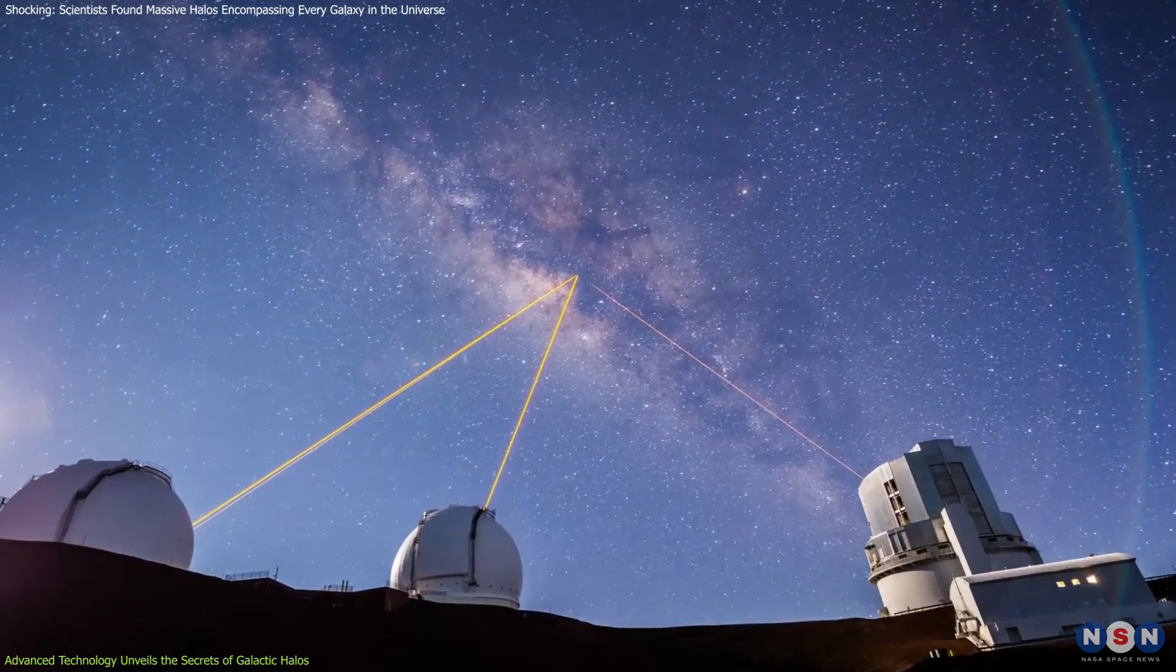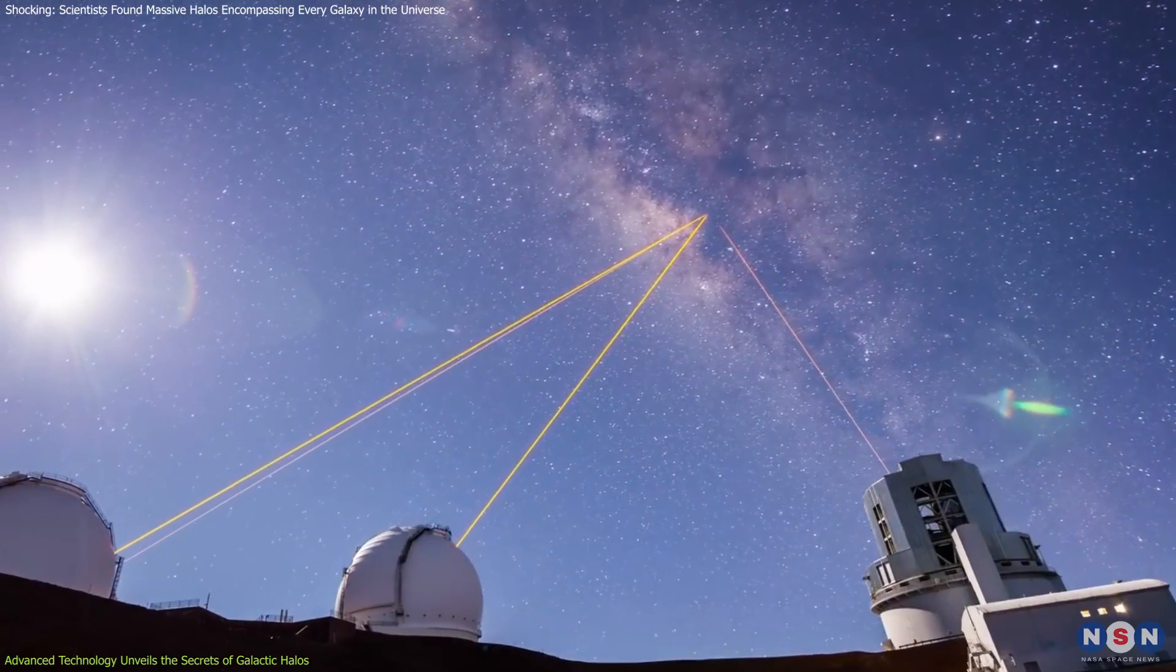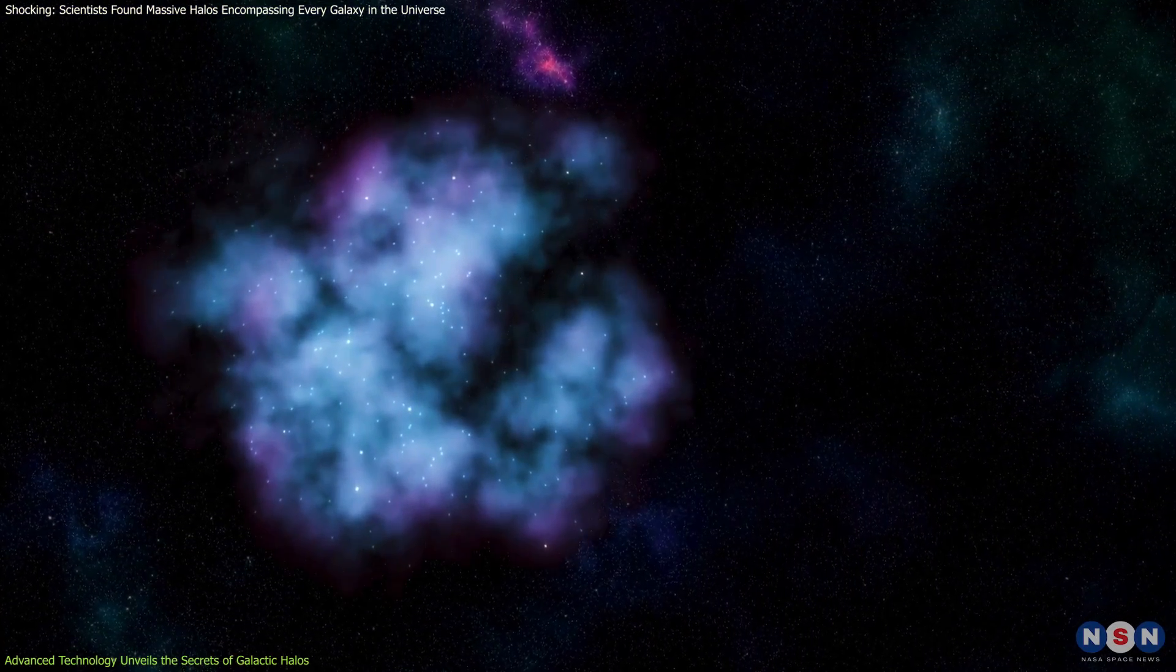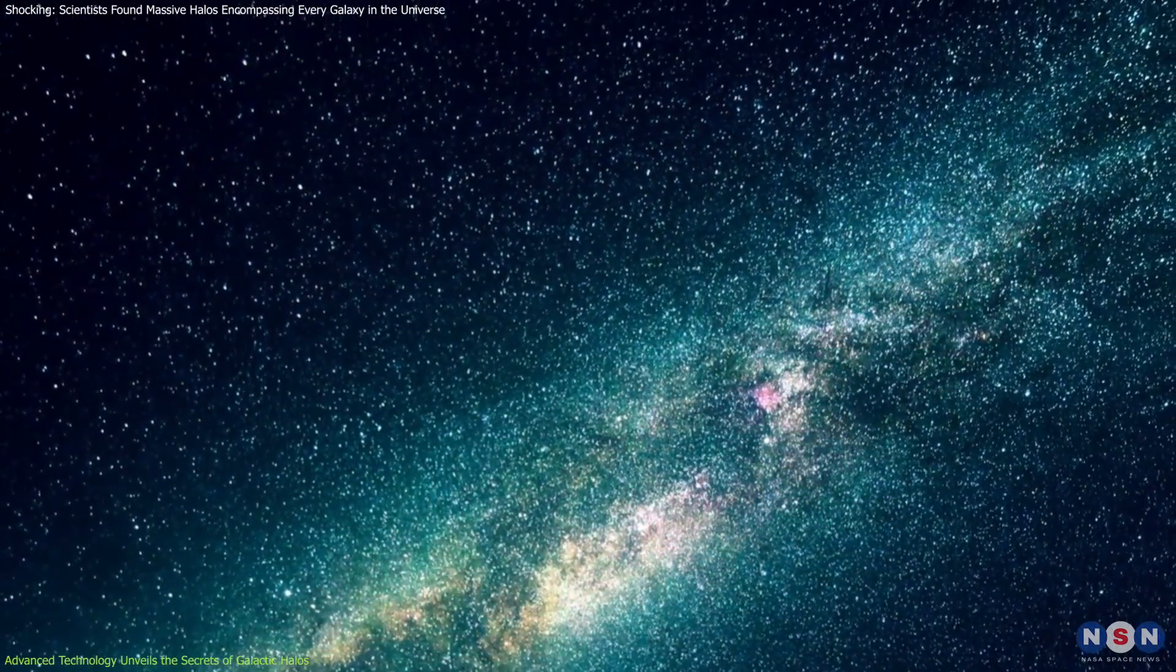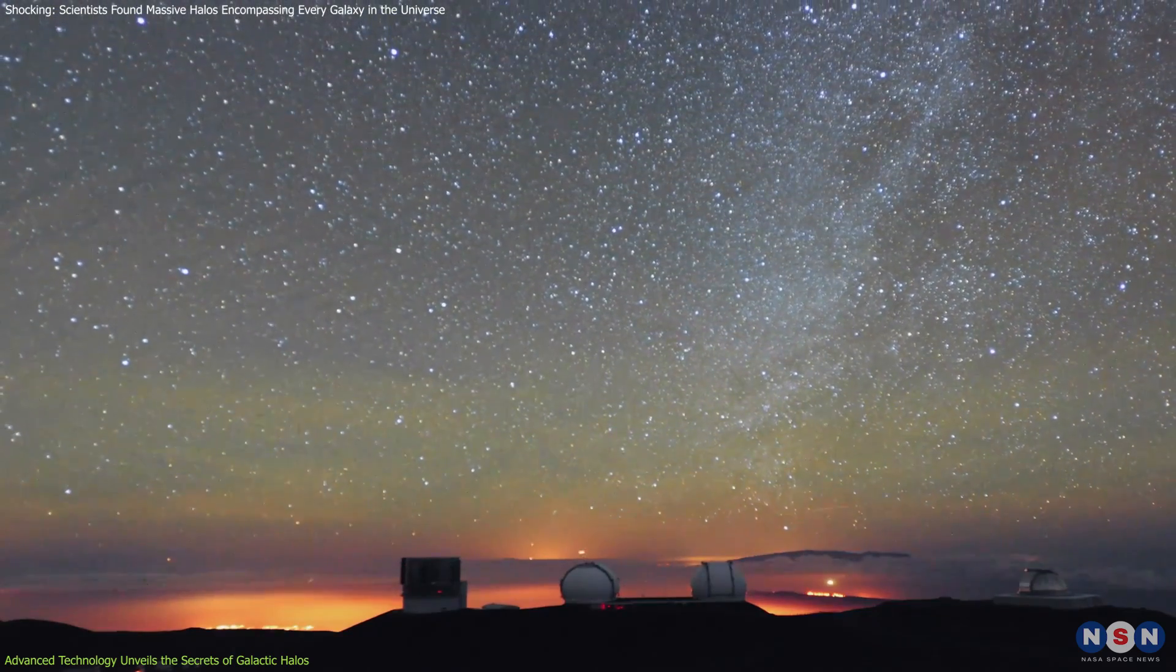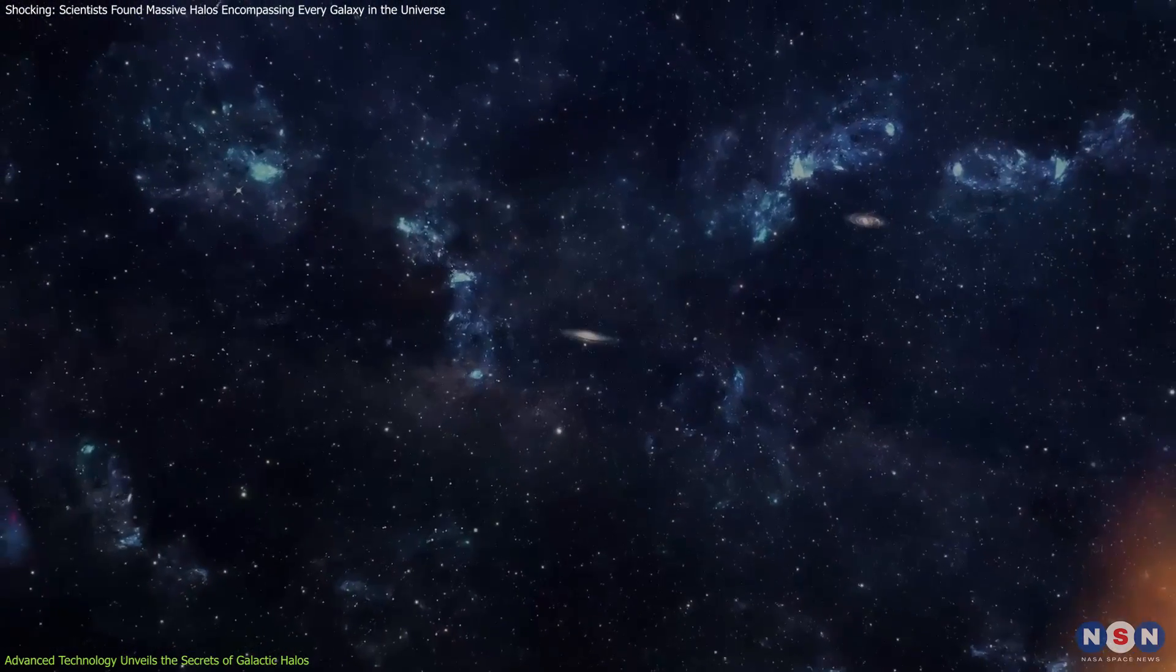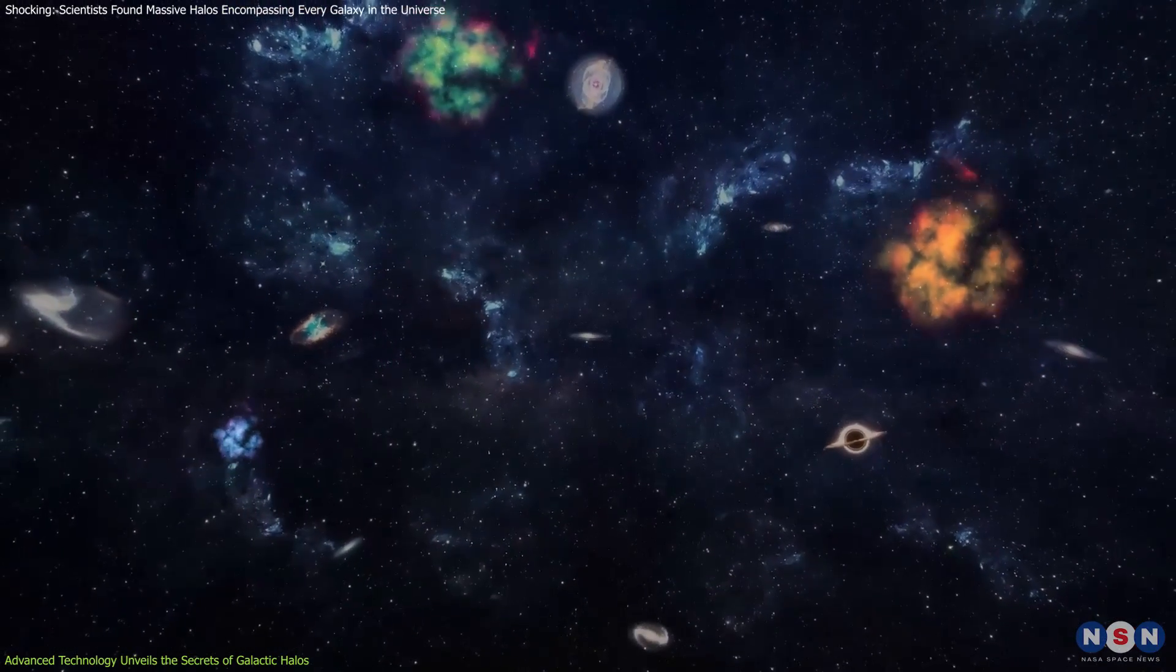The Imager leverages this optimal environment and its ultra-sensitive imaging capabilities to detect incredibly faint light from gas that is tens of thousands of times dimmer than the bright parts of galaxies. This sensitivity is crucial for studying gas halos, which are notoriously difficult to observe due to their diffuse nature and the vast areas they occupy.